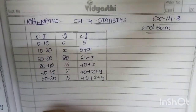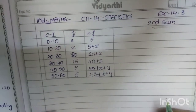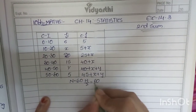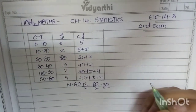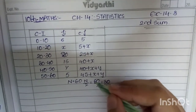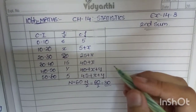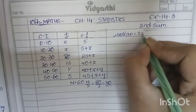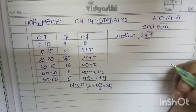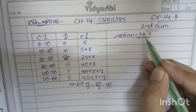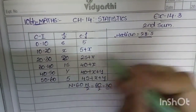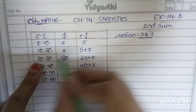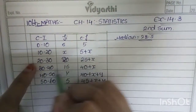The question mentions the number of observations: the addition of frequency equals 60, so n by 2 equals 60 by 2, which equals 30. Normally we choose the median class based on n by 2, but here another method applies because the median is already given as 28.5. We identify which class interval 28.5 lies in — it lies between 20 and 30 — so the class 20 to 30 is our median class.